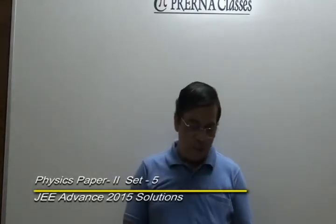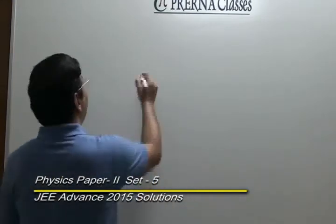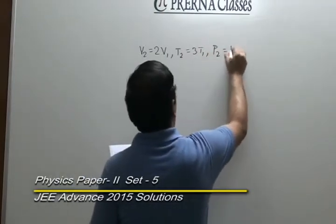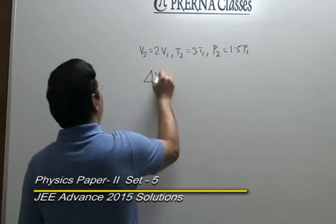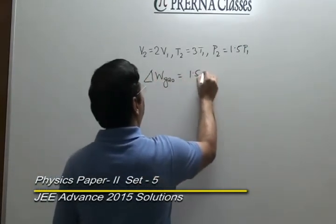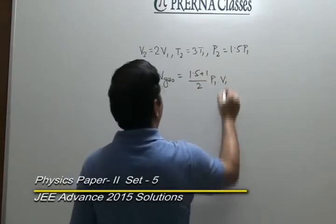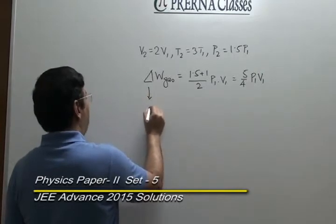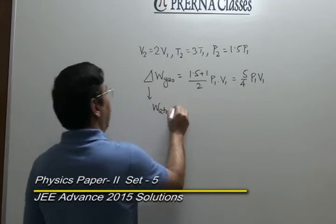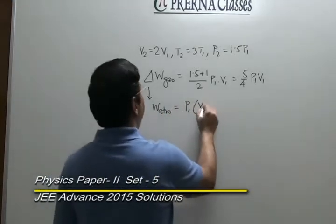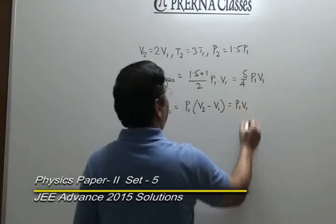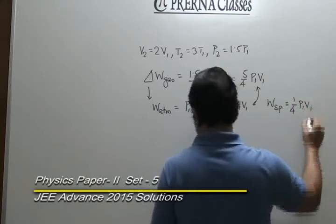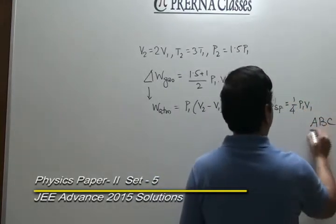Revisiting the first data set where volume becomes 2 times and temperature becomes 3 times: pressure becomes 1.5 times P₁. Total work done by the gas is average pressure times change in volume, equal to 5/4·P₁V₁. Work done against atmosphere is P₁·V₁, and the balance — the energy stored in the spring — is 1/4·P₁V₁. The correct answer for this question is A, B, C.